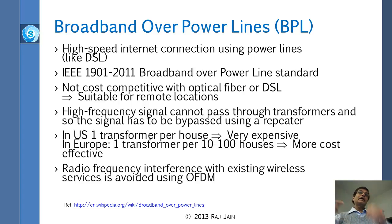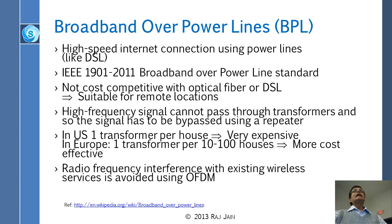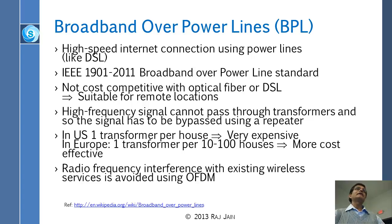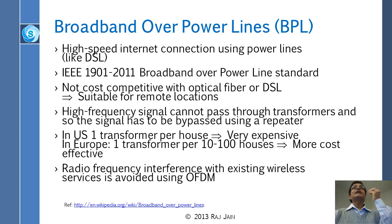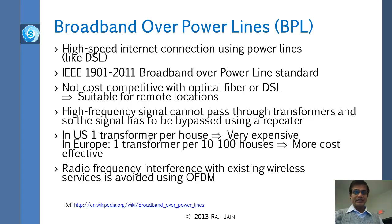The reason BPL failed in the US is that we have too many transformers, and radio frequency signals don't pass through transformers. We have roughly one transformer per house — there's a big pole next to my house with a transformer that brings electricity to me. In Europe, one transformer serves 10 to 100 houses. To deploy BPL in the US, you'd need a repeater around every transformer, which is very cost-ineffective — you'd need a truck roll for each connection. In other countries, especially where people live in high-rise apartments, one transformer can serve 100,000 apartments, making BPL very economical.